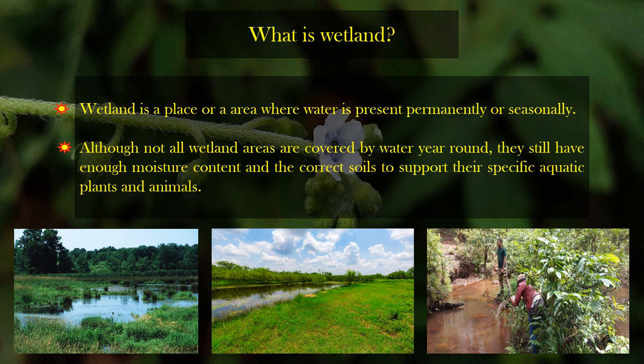So what is wetland? Wetland is a place or area where water is present permanently or seasonally. Although not all wetland areas are covered by water year round, they still have enough moisture content and the correct soil to support their specific aquatic plants and animals or their association.